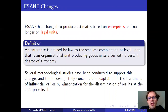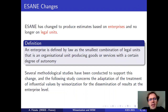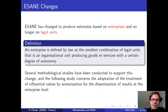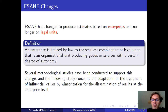We need to use the weight share method because HESAN has changed recently to produce estimates based on enterprises and no longer on legal units. Several methodological studies have been conducted to support this change, and the one I am presenting now is about adaptation of the Winsorization method — a method to treat influential values — adapted for dissemination of results at the enterprise level.